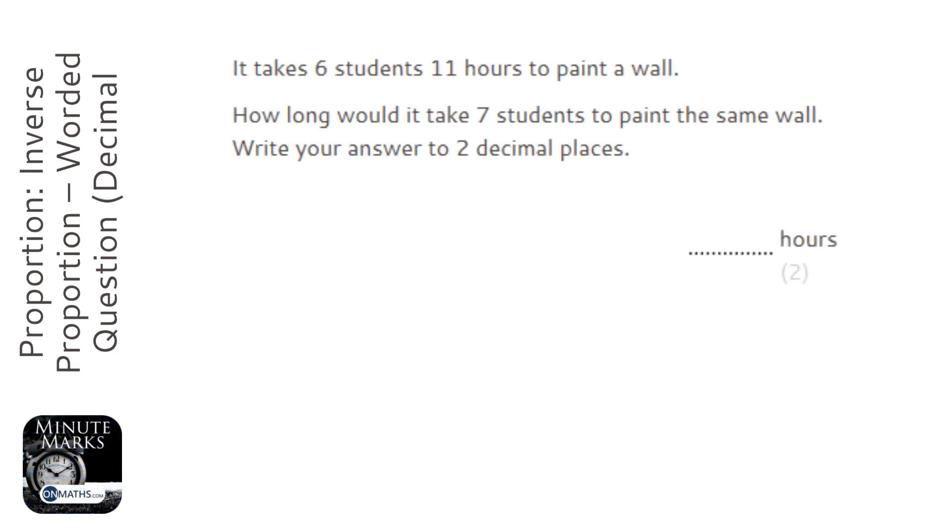Now this seems like a really easy question that you just do 11 divided by 6 and times by 7. The problem that gives us is it basically means if we add a student it takes longer. The problem is that when one looks at this question, they think it's direct proportion. It's not, it's inverse proportion.